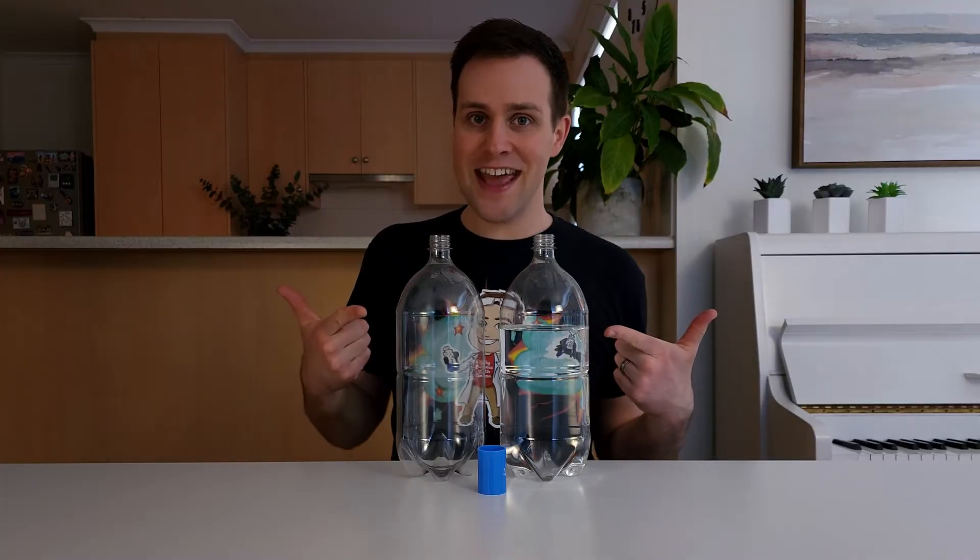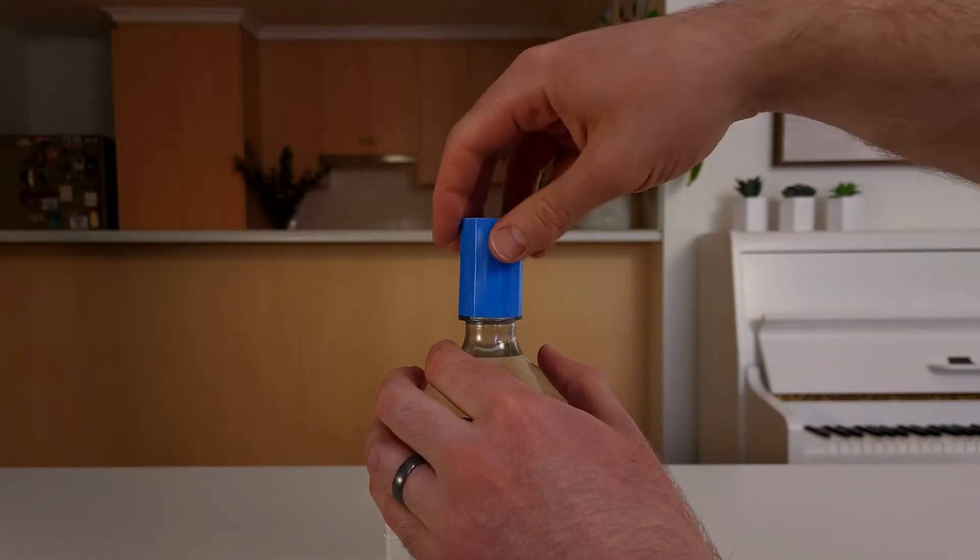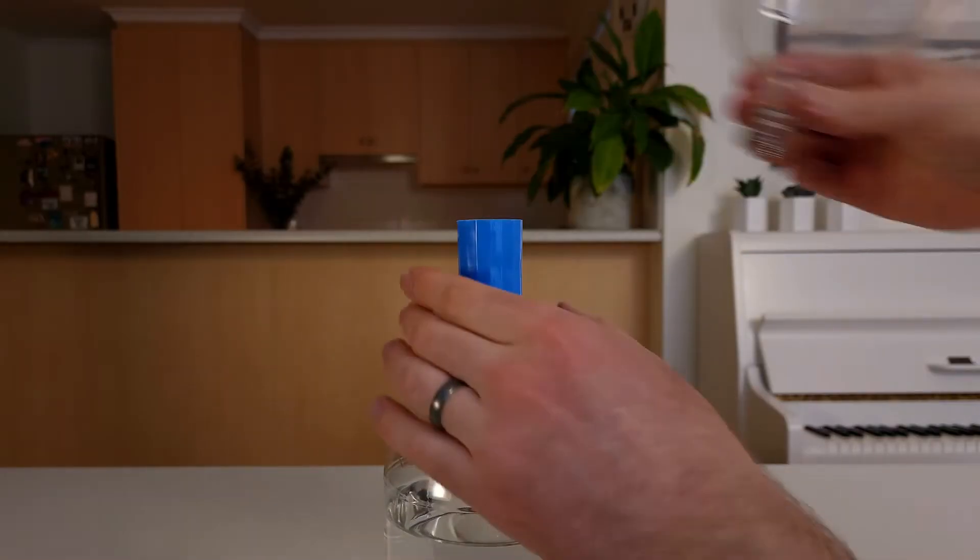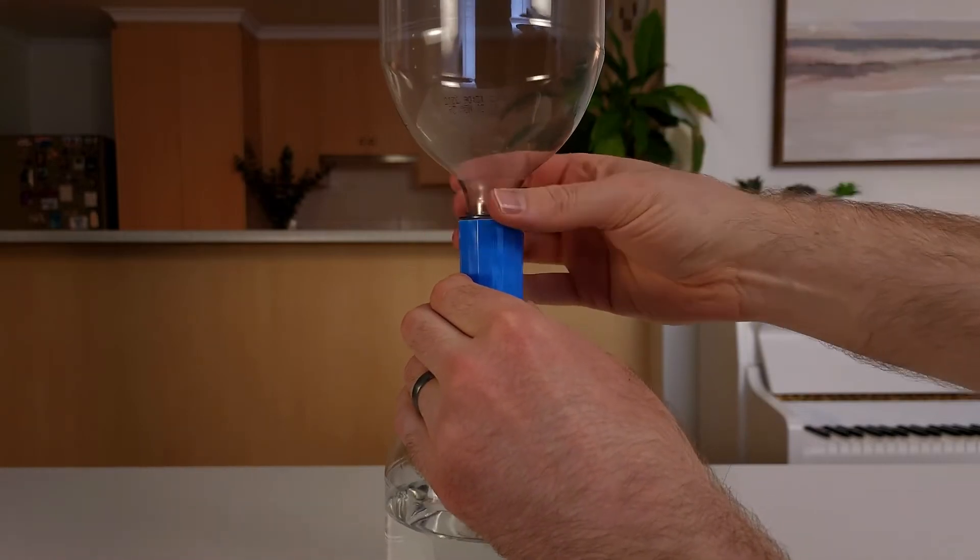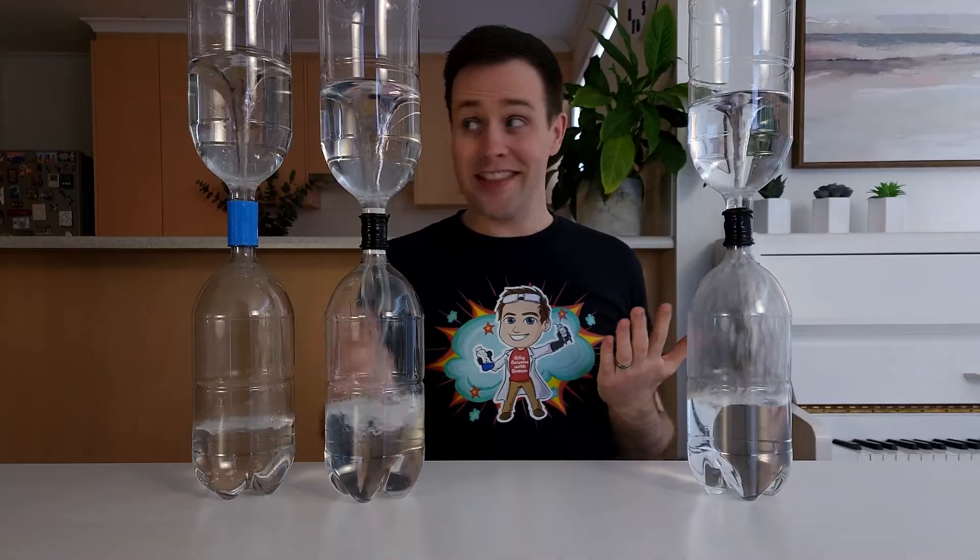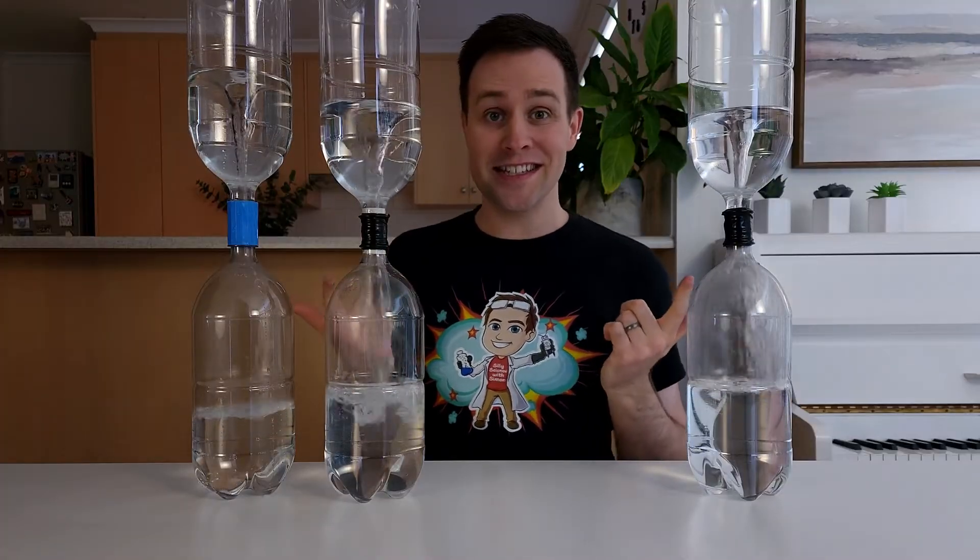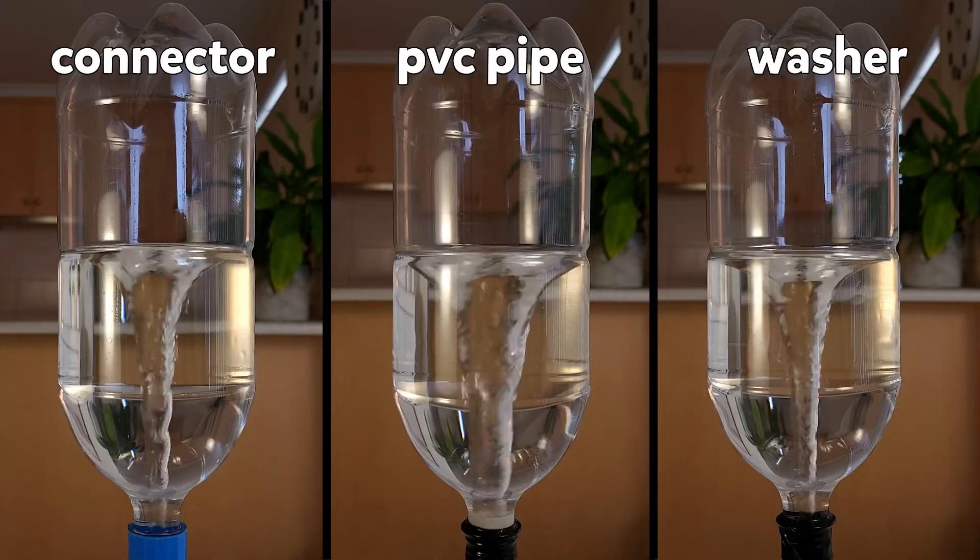The third way of connecting the bottles together involves twisting the connector onto each bottle—first the one filled with water, and then the empty bottle. No matter how you make it, they all create a similar vortex when you swirl the bottle around. Awesome!